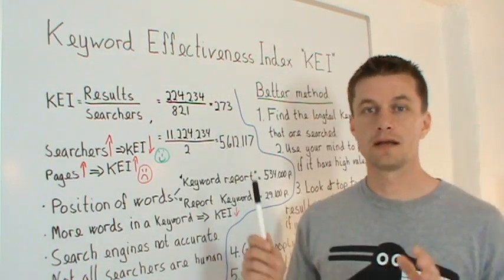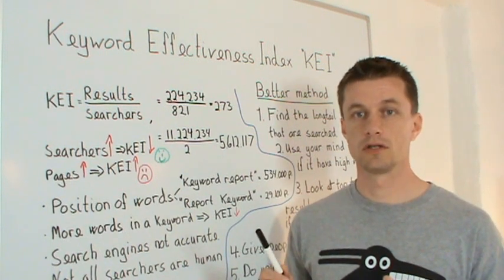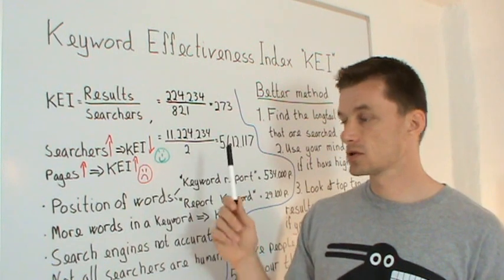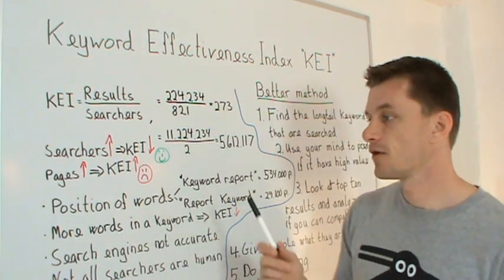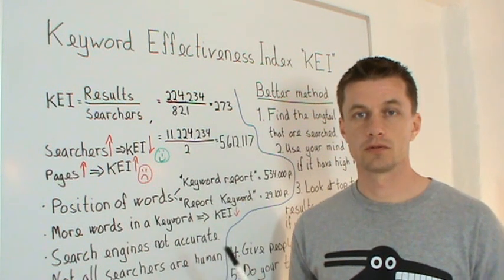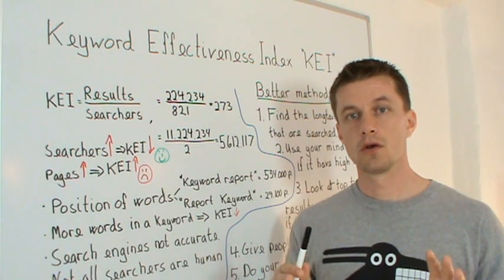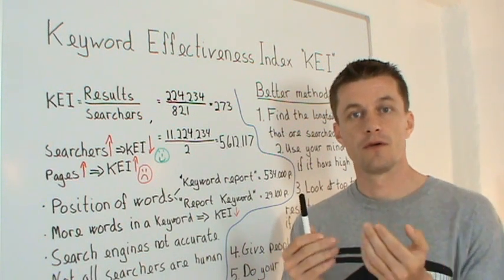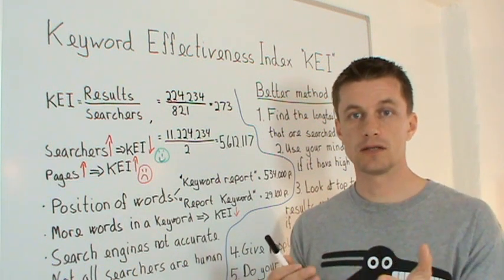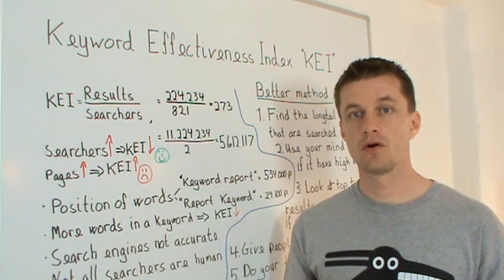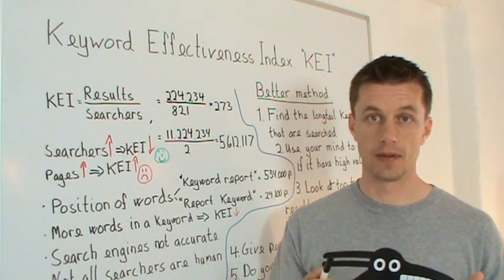But when you calculate KEI there is a lot of things that you have to take into consideration. And some of the most important I will go through here. First there is the position of the words. If it is in an unnatural order you have the problem that usually it won't be written in the text in many pages and therefore it will give a low KEI. But in reality it might not be like that.